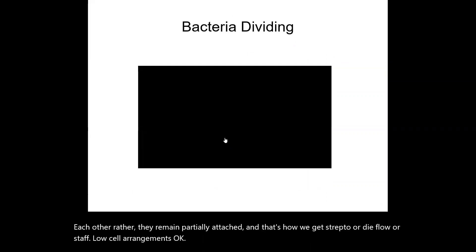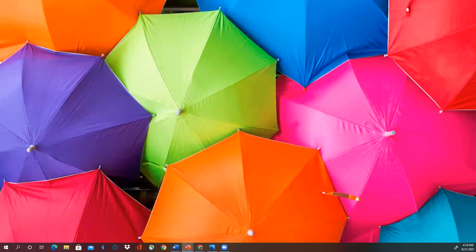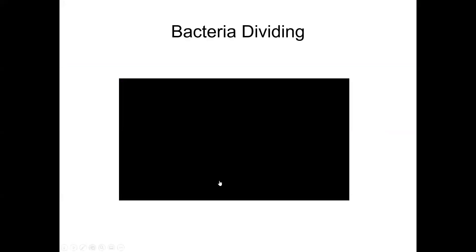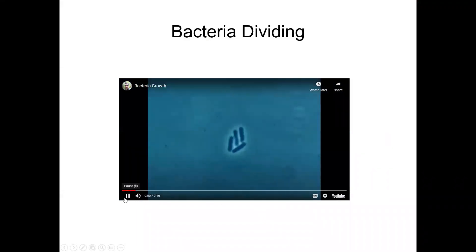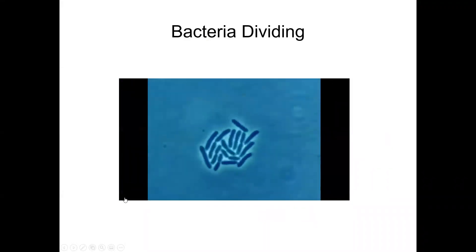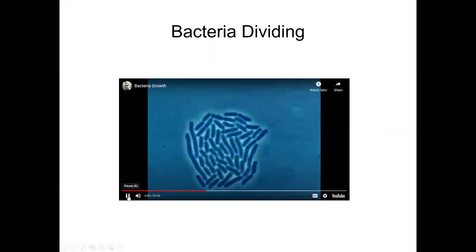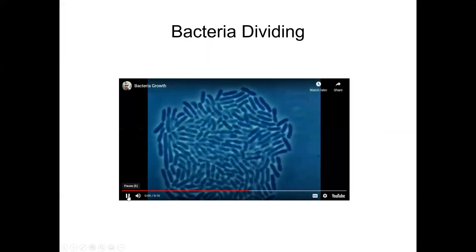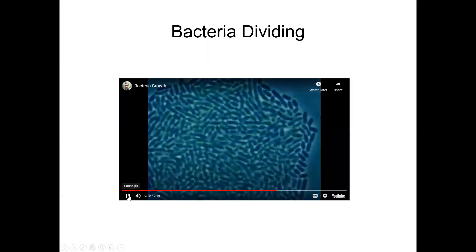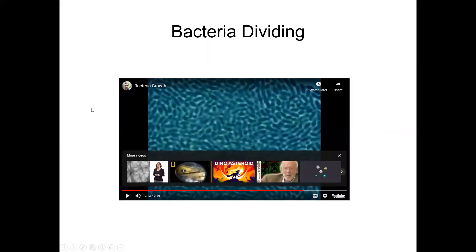So here is a video. Bacteria reproduce very simply and rapidly. So what you were seeing is how quickly bacteria can divide. Now, the process of binary fission takes on average about 20 minutes for one round of cell division.